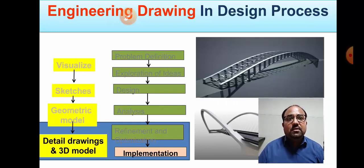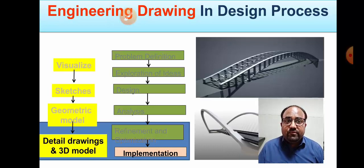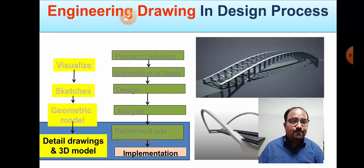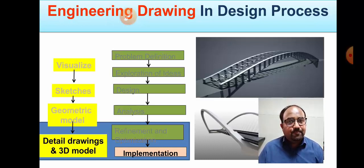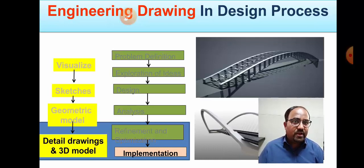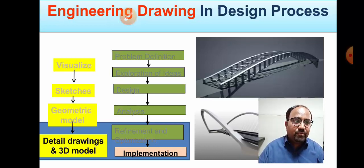This is the simple engineering drawing in the design process. The importance of engineering drawing in the design process includes these steps: first, problem identification; second, exploration of ideas; third, design; fourth, analysis; and last, implementation — your final object, your final model. In the design process we have four procedures: visualization, sketches, geometric model, and 3D model.